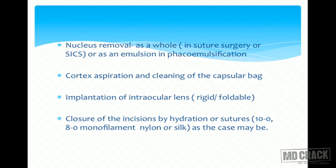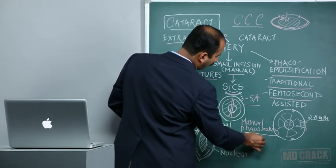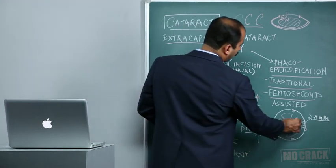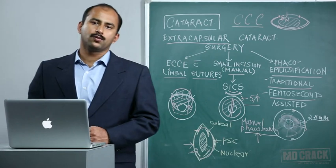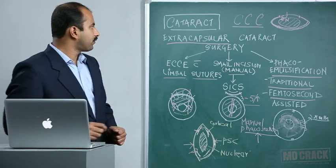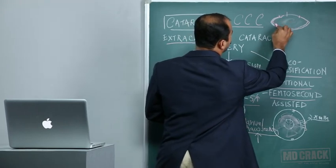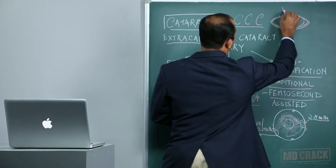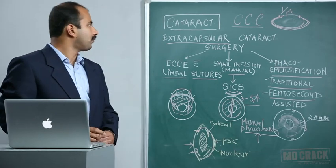Nucleus removal techniques vary by approach: prolapse of the nucleus as a whole from the capsular bag in conventional surgery; in-toto removal in SICS; manual phaco section with various instruments; or pure emulsification by ultrasound energy in phacoemulsification, where no intact nucleus element exits the eye and everything is managed through a very small incision as tiny fragments. Once the endonucleus is removed, the remaining cortex surrounding it is removed by irrigation and aspiration, followed by cleaning and polishing of the capsular bag and implantation of an intraocular lens.